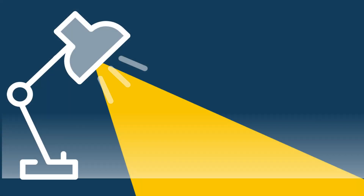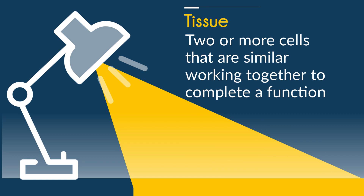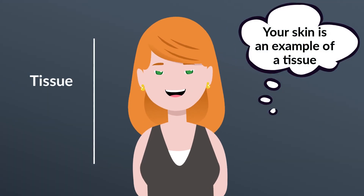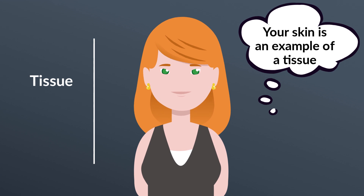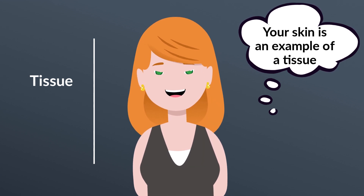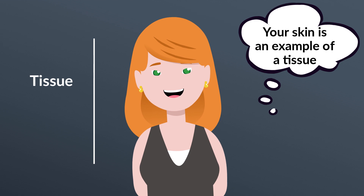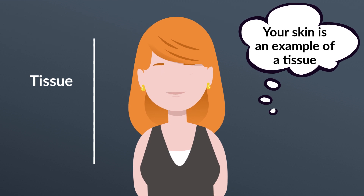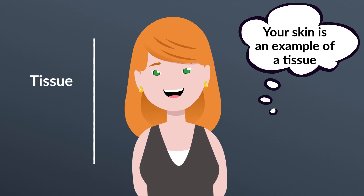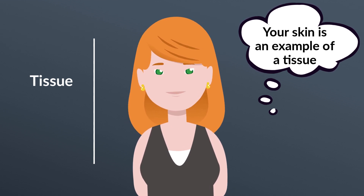Next, a tissue. A tissue is two or more cells that are similar working together to complete a function. Although your skin is an organ, it is made up of different types of tissues. Your outer layer of your skin, called the epidermis, is an example of a tissue.